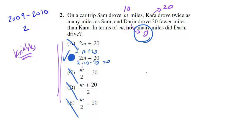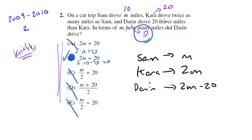So that's the plugging in method. How would you do it normally? Well, this one, it's again translating the real into an equation. On a car trip, Sam drove M miles. So Sam, there's M. Cara drove twice as many miles as Sam. So Cara drove 2M. And Darren drove 20 fewer miles than Cara. So Darren is 20 less than 2M. So it's going to be 2M minus 20. So how many miles did Darren drive? 2M minus 20, B.